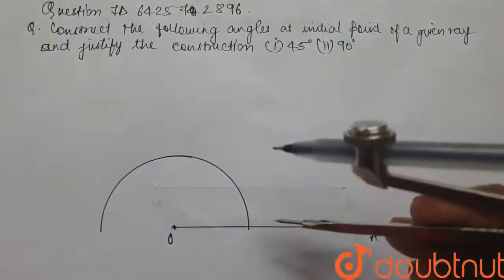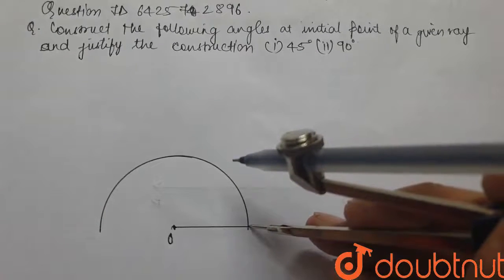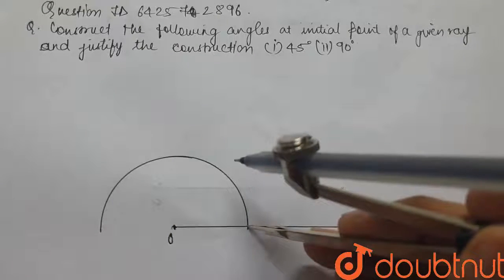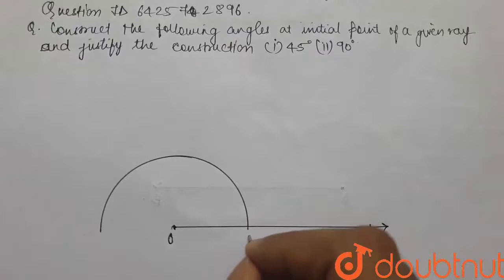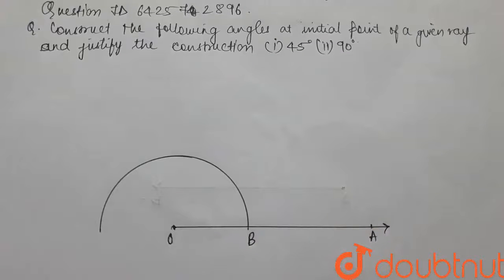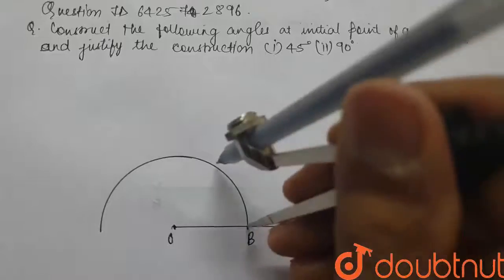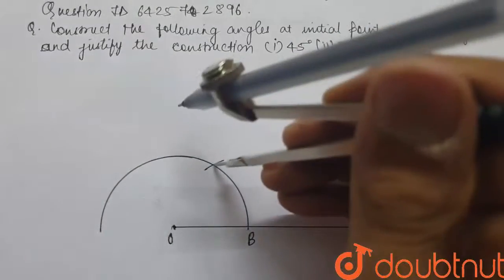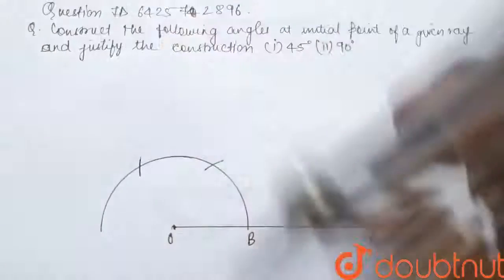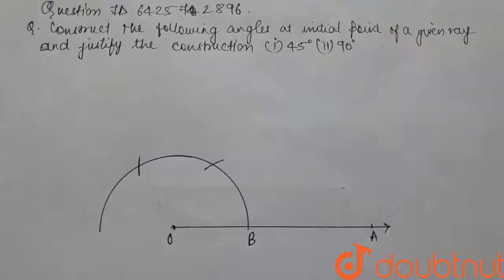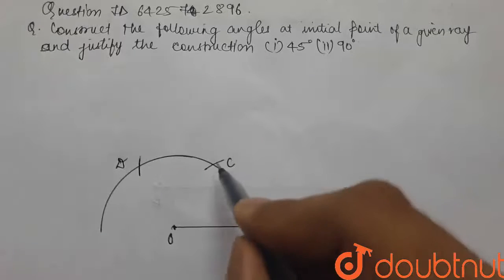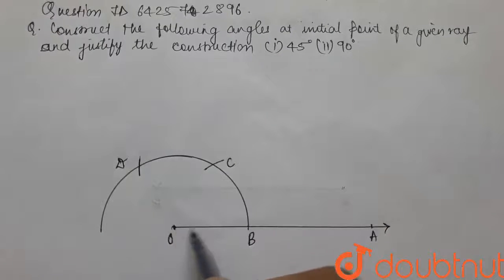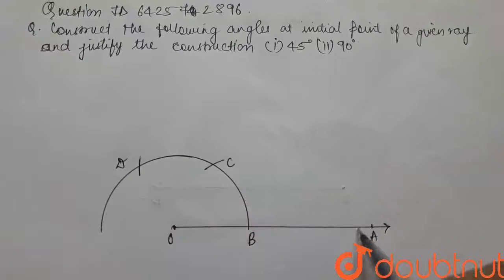Once we have done that, we will make two more arcs by placing our compass with the same distance on this point. First, name this point as B. We will place it on B and make two more consecutive arcs. Let's name these points C and D. If we join point C, then angle COA will be 60 degrees and angle DOA will be 120 degrees.